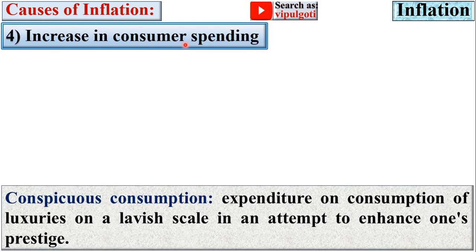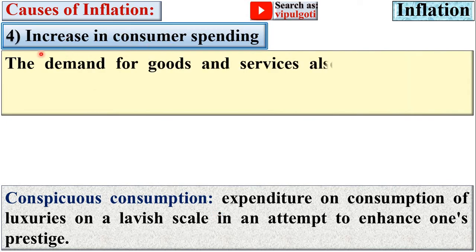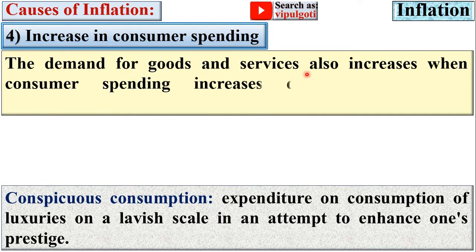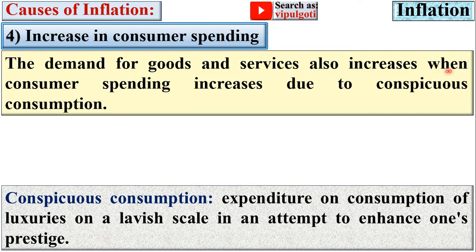Next: increase in consumer spending. An important concept here is conspicuous consumption — expenditure on luxuries on a lavish scale in an attempt to enhance one's prestige. The demand for goods and services also increases when consumer spending rises due to conspicuous consumption, that is, a lavish lifestyle.